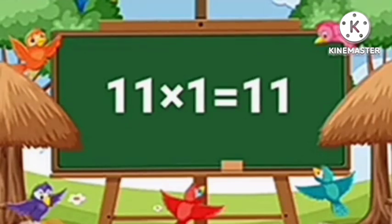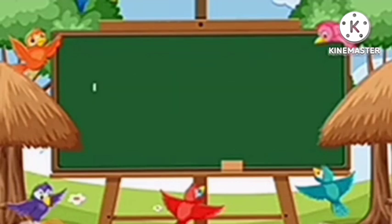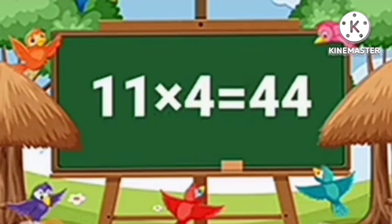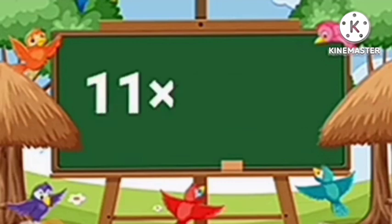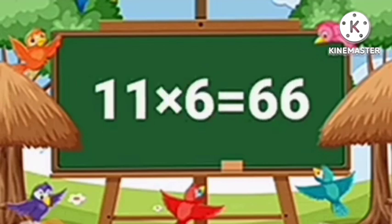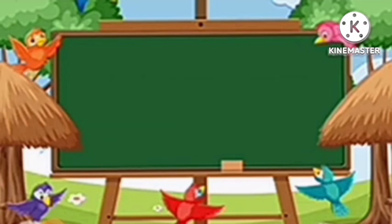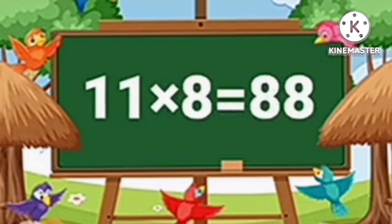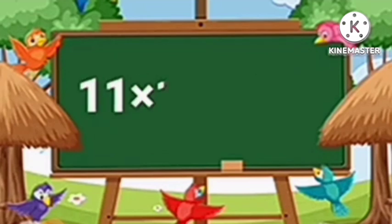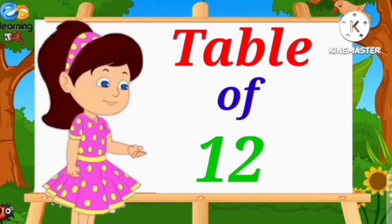Table of Eleven. Eleven ones are eleven. Eleven twos are twenty-two. Eleven threes are thirty-three. Eleven fours are forty-four. Eleven fives are fifty-five. Eleven sixes are sixty-six. Eleven sevens are seventy-seven. Eleven eights are eighty-eight. Eleven nines are ninety-nine. Eleven tens are one hundred ten.